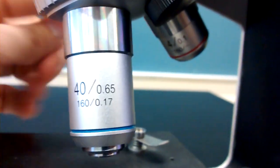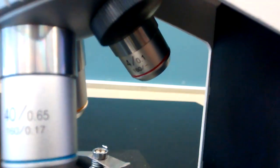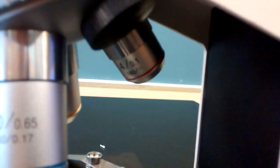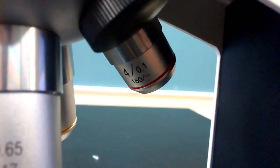This small one here with the red band is called our scanning objective lens. That first number there is a 4. And that means that will magnify all by itself four times.